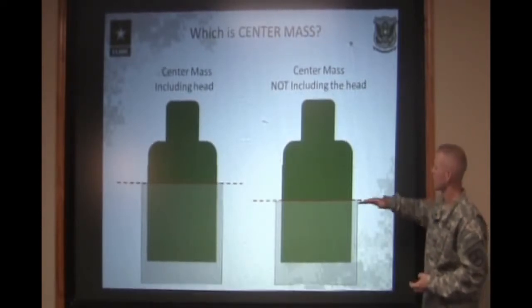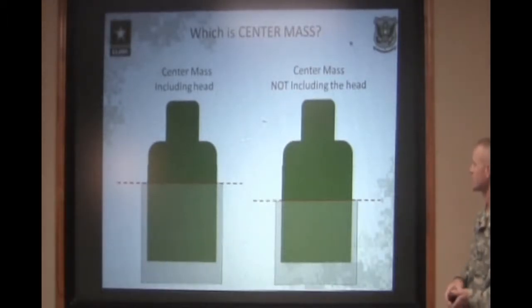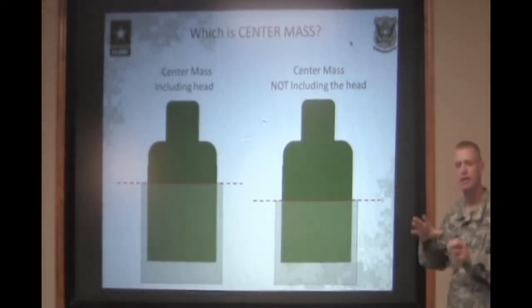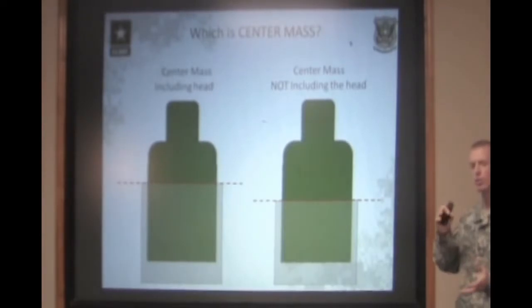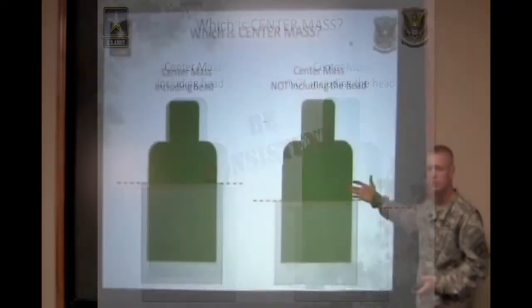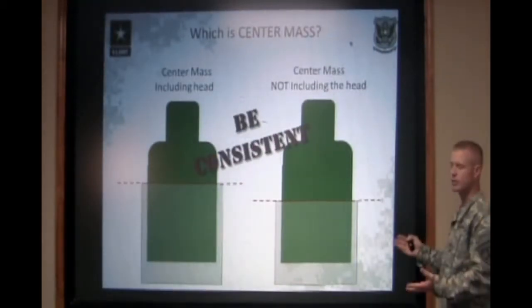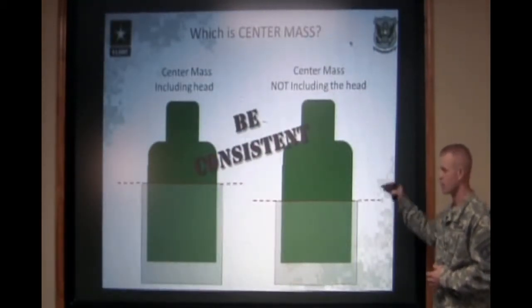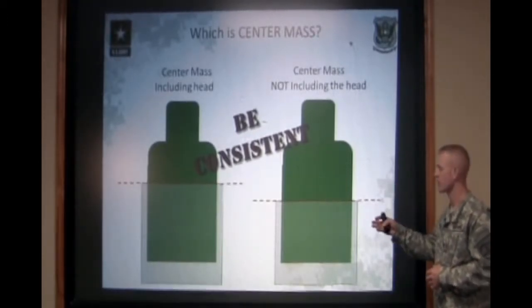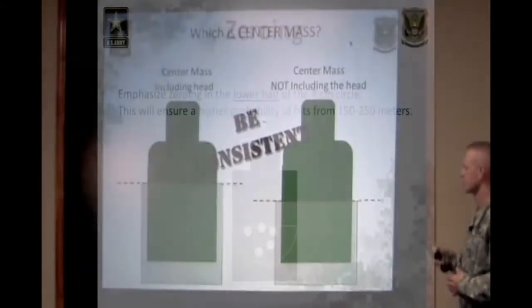I personally prefer center mass not including the head — it's the biggest part of the body. At 300 meters, the head of the target can get kind of distorted and you can't really tell, but you can always see the bulk of the body. Aiming centered on that bulky body allows me to hold center mass very consistently from shot to shot. The most important thing you can do is be consistent with either hold that you use — make sure you're holding the exact same hold each shot.